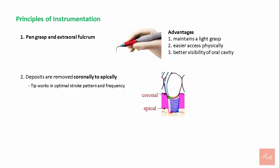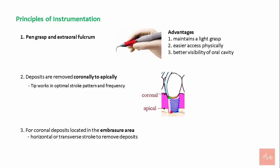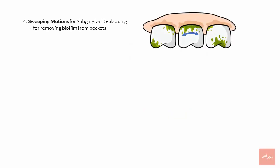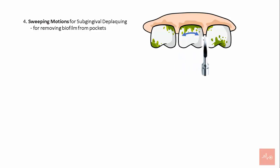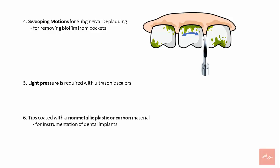In the embrasure area, a horizontal or transfer stroke is recommended to remove deposits. Sweeping motions for sub-gingival deplaquing are suggested for removing biofilm from the pockets. Light pressure is required with ultrasonic scalers. Tips coated with non-metallic plastic or carbon material are advised for instrumentation of dental implants.